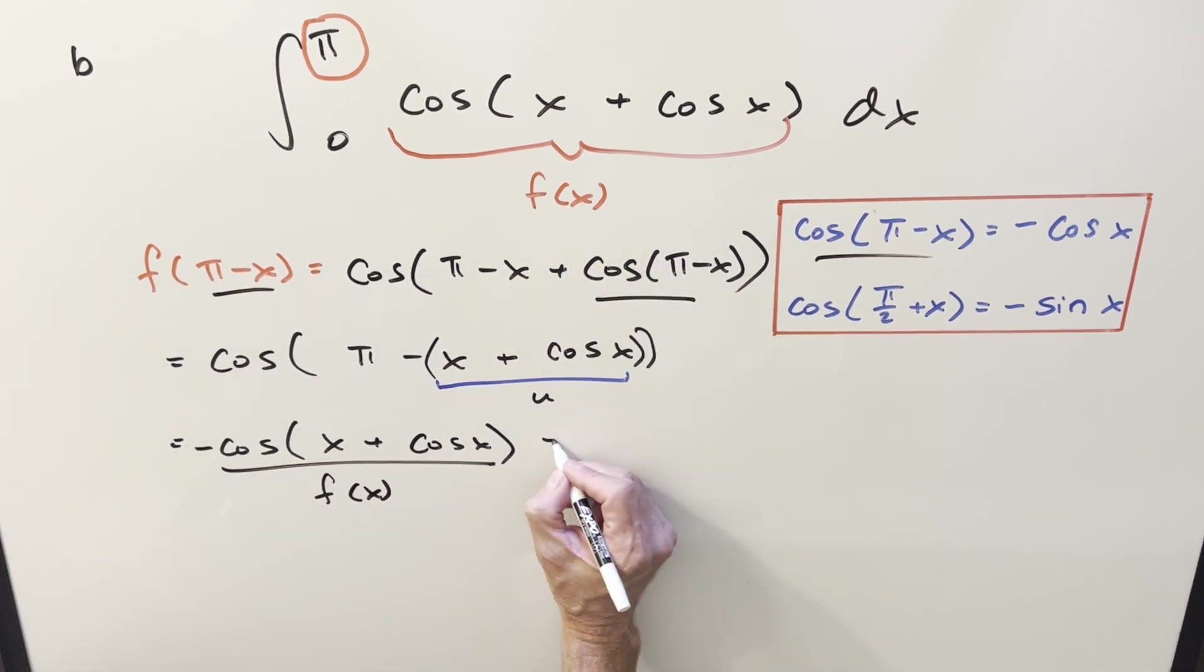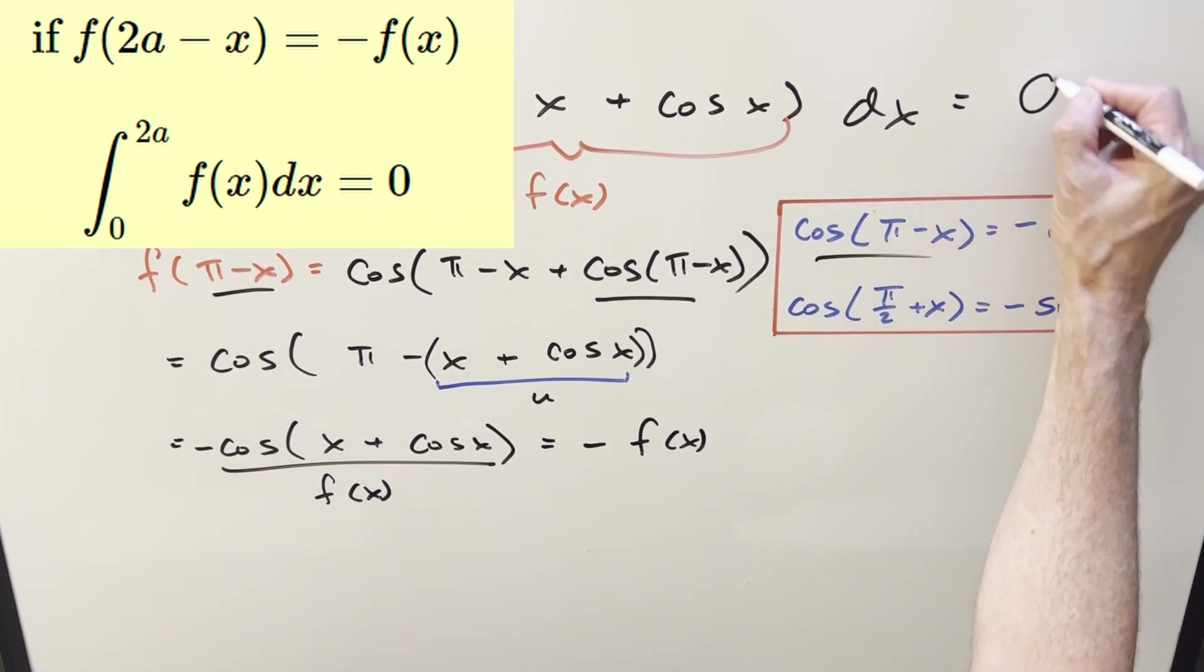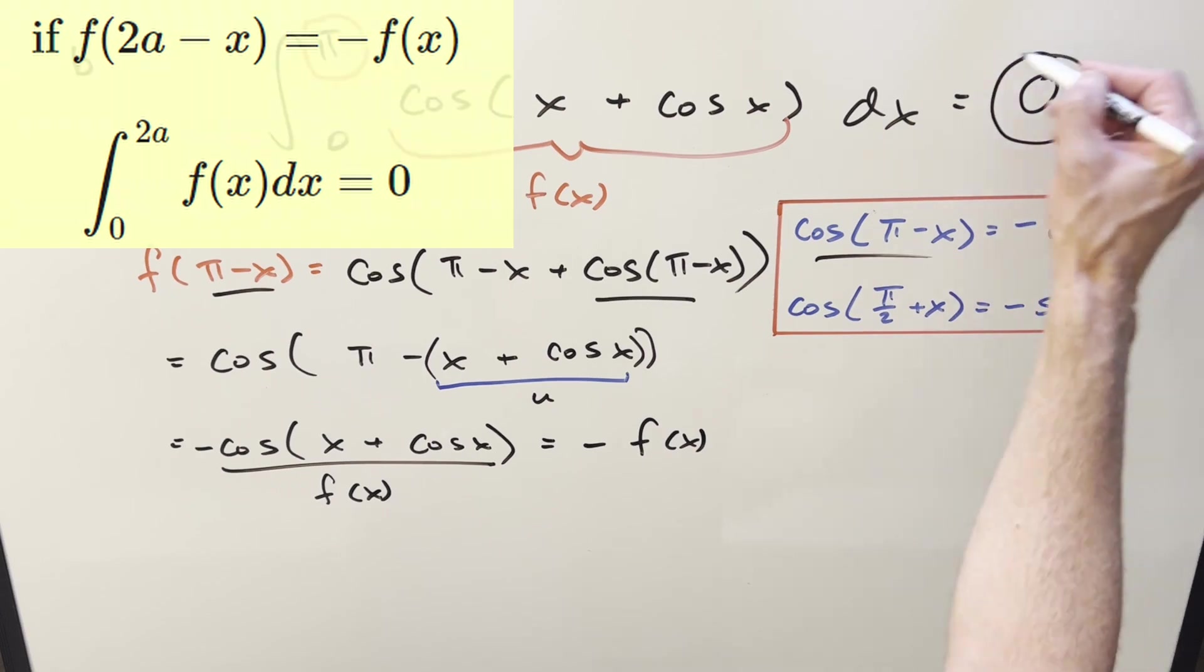So f of π minus x equals minus f of x. And so using King's principle, it just tells us the whole integral is just going to be zero and that's going to be our first method.